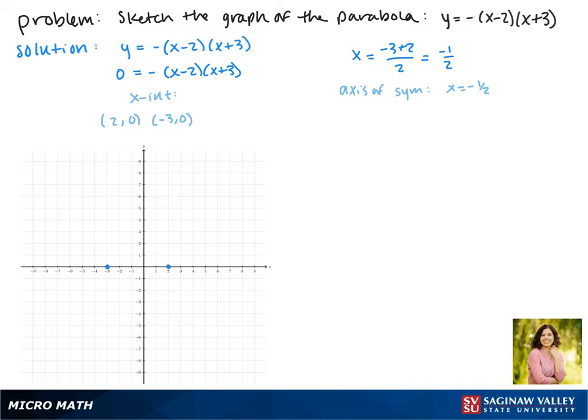We could also FOIL out our equation to put it into a different form. We could FOIL it out to give us -x² - x + 6, and then we could use our vertex formula to give us the x value: -b over 2a. So either way we're going to get the same x value of -1/2. Both ways are good to figure out the axis of symmetry.